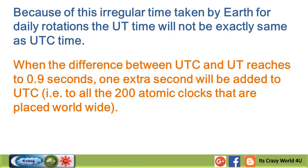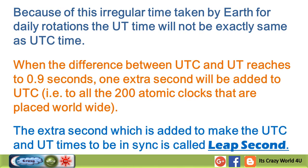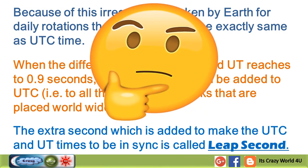When the difference between UTC and UT reaches 0.9 seconds, one extra second will be added to UTC — that is, to all 200 atomic clocks placed worldwide. The extra second added to keep UTC and UT in sync is called a leap second.